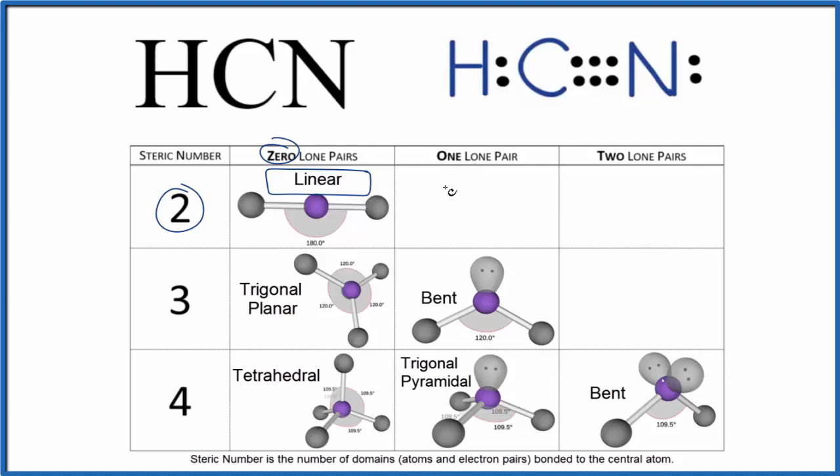You could also use the AXE notation to figure out the molecular geometry. A is the central atom, that's the carbon. X, that's the number of atoms bonded, one, two.